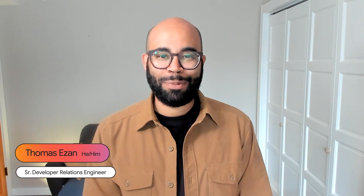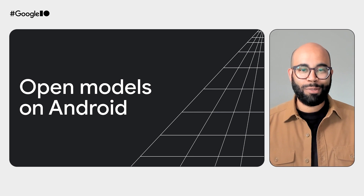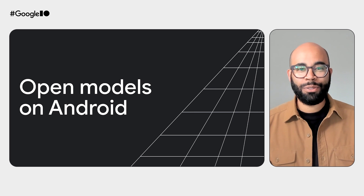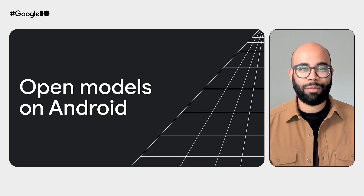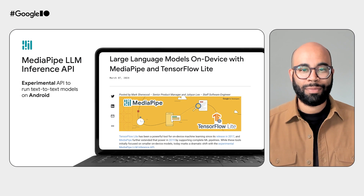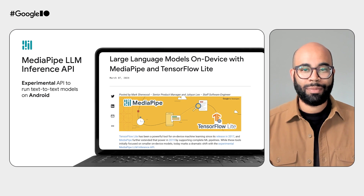Hello, my name is Thomas Aizan, and I'm an Android developer relations engineer working on machine learning and generative AI. As Terence mentioned, Gemini Nano is Android's recommended path to production if you want to run GenAI inference on device. But open large language models have also grown in popularity in the past year, and although they are not a good fit for production due to performance and memory challenges, it is possible to play with some of them on Android devices. Recently, research teams at Google released the MediaPipe LLM inference API — a new experimental API, part of MediaPipe, that lets you run text-to-text GenAI models directly on device.